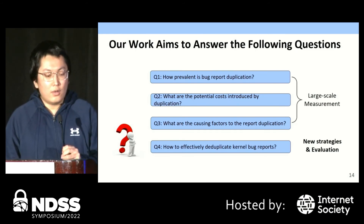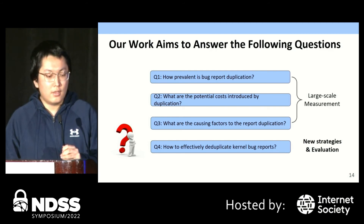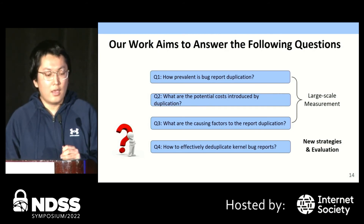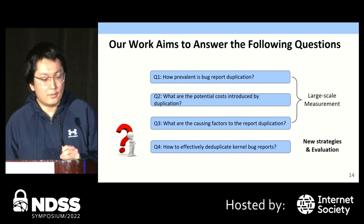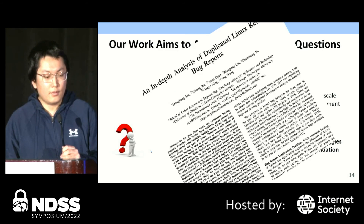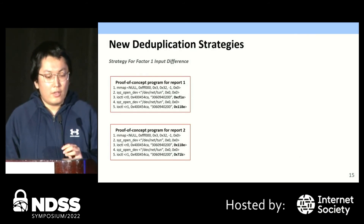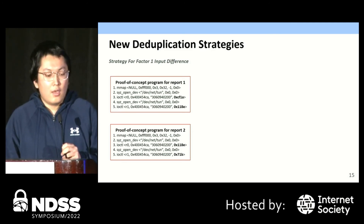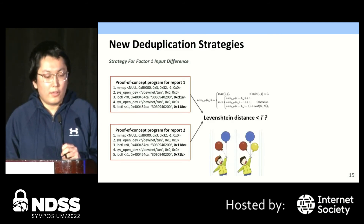So far, through large-scale manual analysis, we have answered the first three questions. In the following, I will elaborate on how we design new strategies for deduplication based on our analysis and show the evaluation results. Due to the time limit, I will only cover two strategies. For the first factor, we calculate the similarity of proof-of-concept programs using Levenshtein distance. We treat two reports as duplicates if the distance is smaller than a threshold; otherwise, they are not duplicates.